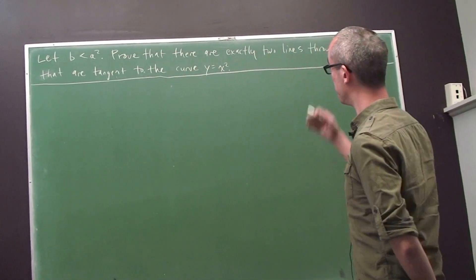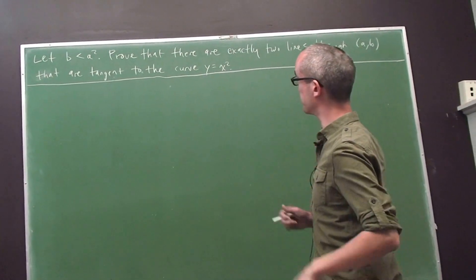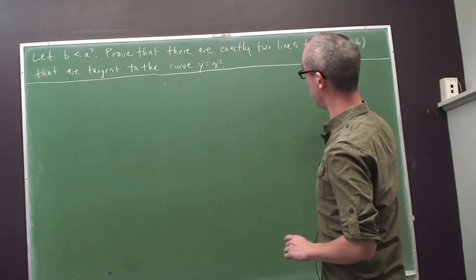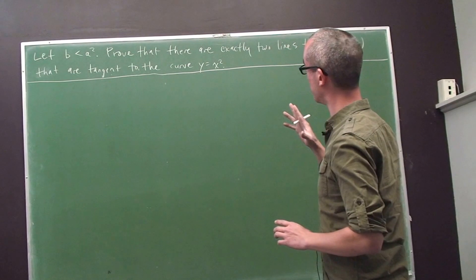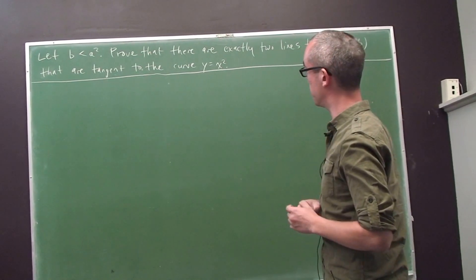Okay, so in this problem we're given a parabola, y equals x squared. We're given a point (a, b) and we're asked to prove that there are exactly two lines through that point that are tangent to the parabola.